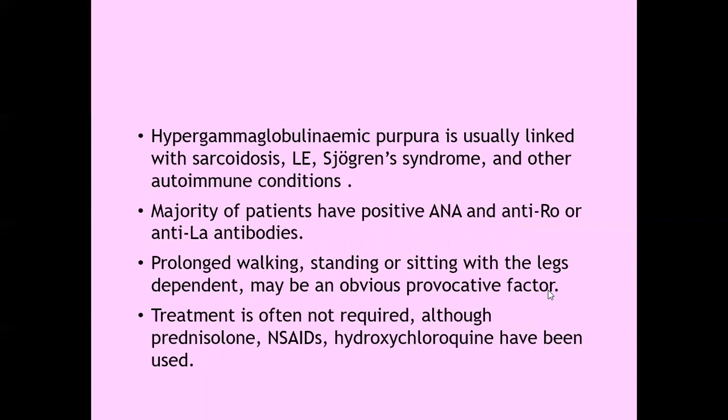Hypergammaglobulinemic purpura is usually linked with sarcoidosis, lupus erythematosus, Sjögren syndrome, and other autoimmune conditions. Majority of these patients have positive anti-nuclear antibodies and anti-Ro or anti-La antibodies. Prolonged walking, standing, or sitting with legs dependent may be the obvious provocative factor. Treatment is not required, although prednisolone, NSAIDs, and hydroxychloroquine have been used once the purpura sets in.